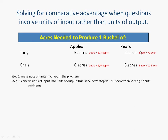Tony needs two acres to produce a bushel of pears, which means if we only have one acre, we're only going to be producing a half a bushel of pears. Now look at Chris: Chris has six acres producing one bushel of apples, so one acre gives us one-sixth of a bushel of apples. Likewise, three acres to produce a bushel of pears means each acre is only producing one-third of a bushel of pears.